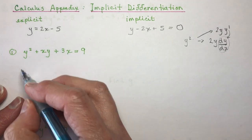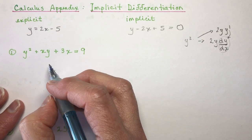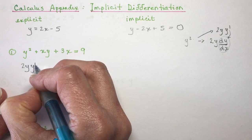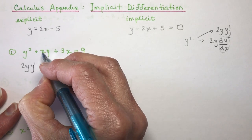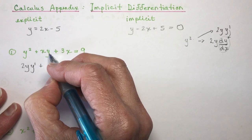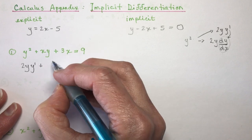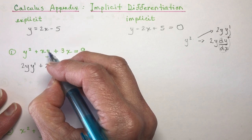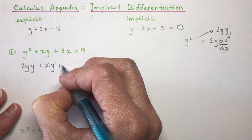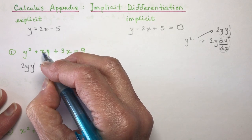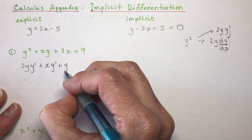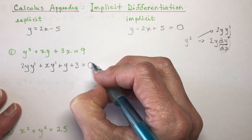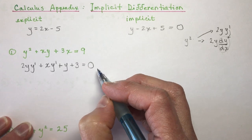The same rules apply that you've already done in calculus. The derivative of y squared is 2y·y′. For the term xy, that's a product, so apply the product rule: the first times the derivative of the second gives x·y′, plus the second times the derivative of the first gives y·1, which is just y. The derivative of 3x is 3, and the derivative of a constant is 0.